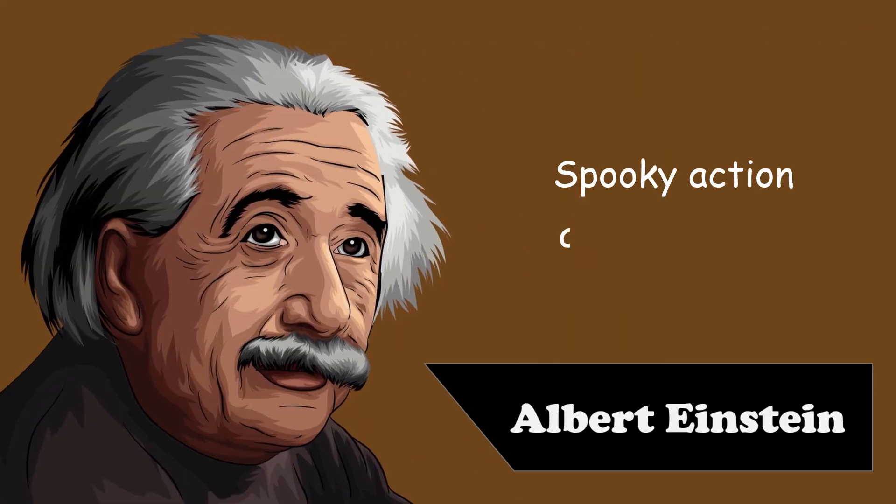But before we get there, the second thing we need to discuss is quantum entanglement, or what Einstein called spooky action at a distance. This is a phenomenon where two particles can be created in a way where, when you observe one of them, for example, through a property called spin, the other immediately becomes the opposite. They're somehow entangled together.